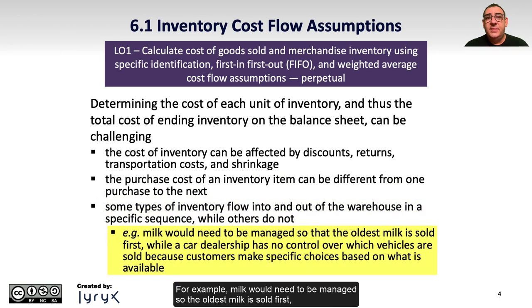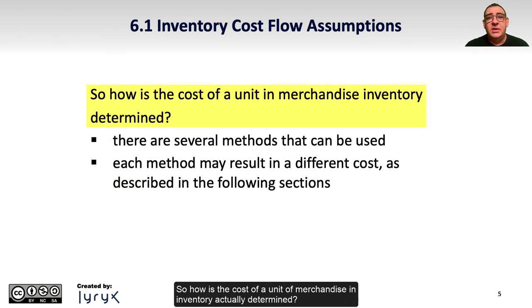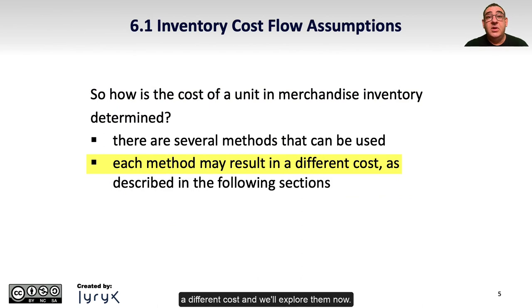For example, milk would need to be managed so that the oldest milk is sold first, while a car dealership has no control over which vehicles are sold because the customer makes specific choices based on what's available. So how is the cost of a unit of merchandise inventory actually determined? There are several methods that can be used, and each method may result in a different cost.